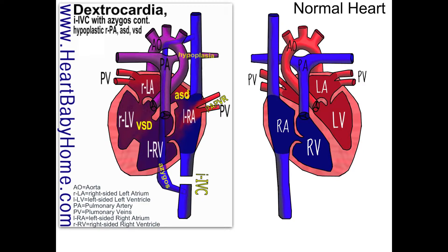Let's start with the IVC. Inferior means from below and superior means from above, so the inferior vena cava is interrupted. The blood coming back from the body to the heart can't get into the right atrium from below. So it goes through the azygos vein up and connects to the superior vena cava and then into the left-sided right atria.